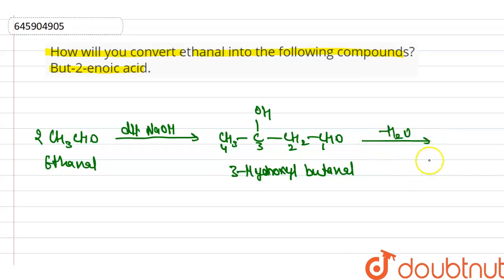Then our product is CH3CH double bond CHCHO. That is our complete aldol condensation product, which reacts with Tollen's reagent.